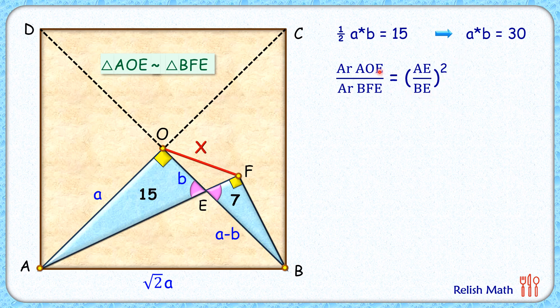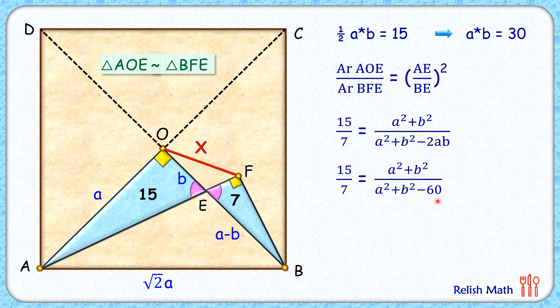Now here, putting the values, area is given as 15 and 7. AE is the hypotenuse length, and thus it will be square root of a² plus b². BE is a minus b. Simplifying it by opening the brackets in the right-hand side, the numerator will become a² plus b², and denominator will become a² plus b² minus 2ab. We'll put the value of ab as 30, so we get 15 by 7 is a² plus b² by a² plus b² minus 60. Cross-multiplying and simplifying, we'll get a² plus b² as 225 by 2.